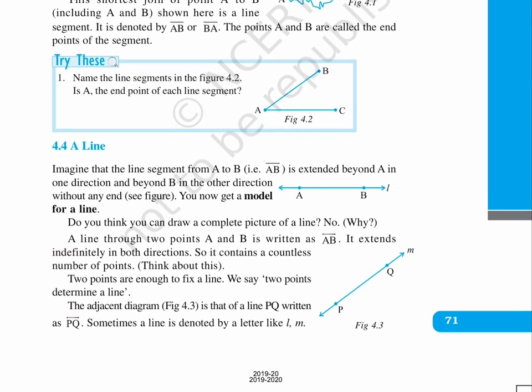4.4. A line. Imagine that the line segment from A to B, that is AB with an overhead dash, is extended beyond A in one direction and beyond B in the other direction without any end. The figure represents the same. You now get a model for a line.